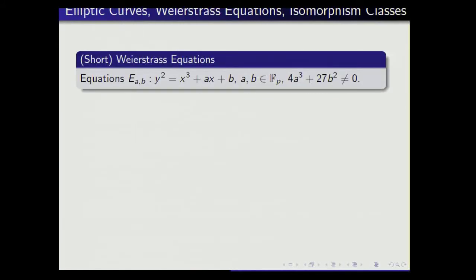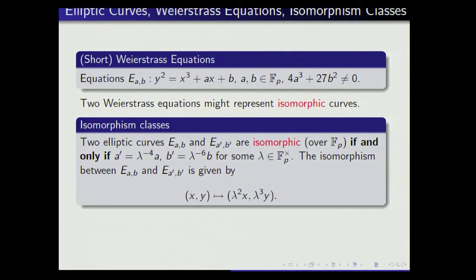Let me tell you a little bit about the model for analyzing this problem. Elliptic curves for us will be given by short Weierstrass equations, Y² = X³ + AX + B, with non-zero discriminant. Some of these equations will be isomorphic, so we need to distinguish isomorphic equations. The classical way to do this is that two equations are isomorphic if and only if their coefficients are related via a scalar λ, where A' = λ⁻⁴ · A and B' = λ⁻⁶ · B.